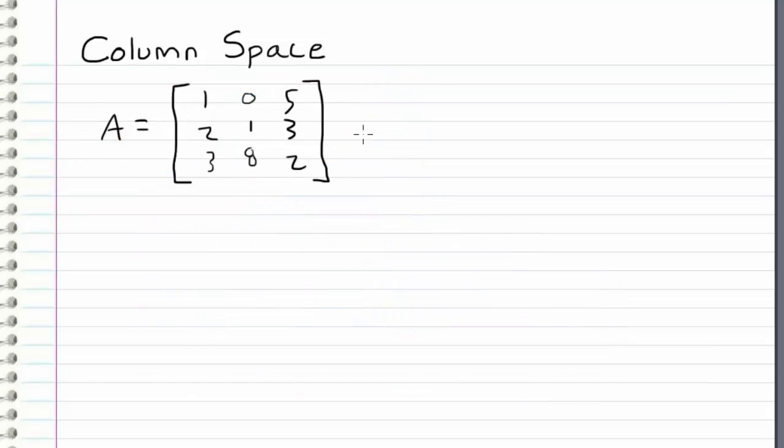So let's consider this matrix as an example. If I want to find the column space of this matrix, what I do is I split up this matrix into its columns. So I'll refer to this column as V1, this column as V2, and this column as V3.